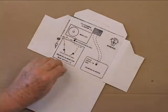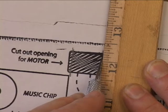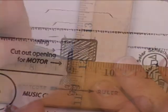Unfold the box and cut the opening for the motor with an exacto knife. Be sure to make your cuts on the inside of the rectangular outline. It's better for the motor to be a little snug than a little loose.